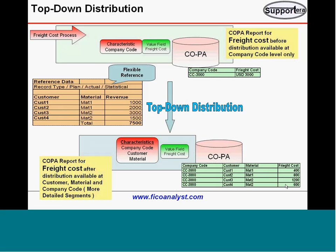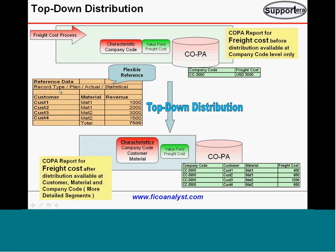Practically, the freight cost may not be based on revenue — it may be based on weight, volume, or different things. Yes, that is what I said: it is a flexible reference. I took revenue as an example, but it can be anything — statistical values, actuals, plan, any record type, any characteristic field, or another value field.